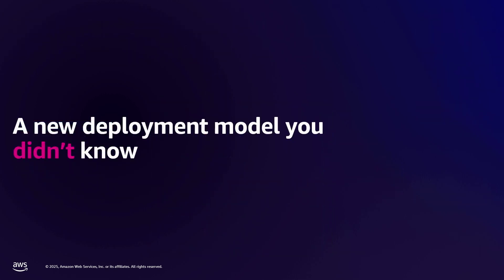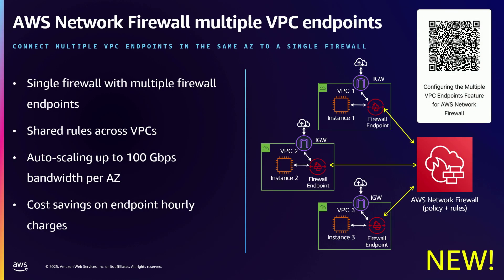Here's a new one you probably didn't know about: multiple VPC endpoints. This lets you take a single firewall and have multiple endpoints within the VPCs where you want inspection. It used to be one firewall endpoint per VPC per firewall. Now you can have multiple, and it can span between accounts as well. You can be the firewall owner, handle the billing, and then in another account's VPC, deploy a firewall endpoint there. This is a brand new feature released a couple of weeks ago. It also includes auto scaling up to 100 gigabits per second per AZ, with cost savings from consolidated billing and not having to have different firewalls attached to different VPCs.